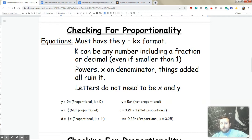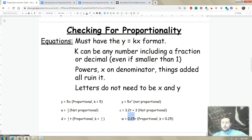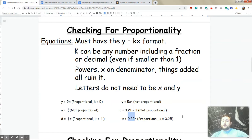And the last one, w equals 0.25r. That's two letters on either side of the equal sign with a number. It can be smaller than 1. It's a decimal in this case, so k is 0.25, proportional. That's how you can tell an equation is proportional—it just has to have that y equals kx format.